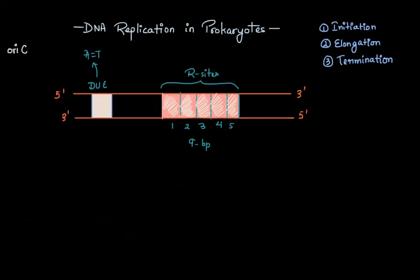These R sites are where the first protein responsible for initiating replication binds. That protein is DnaA protein. DnaA belongs to the AAA+ ATPase family. As the name suggests, it is an ATPase, so it uses ATP and breaks it down into ADP to get energy to function properly.